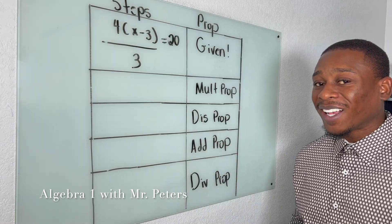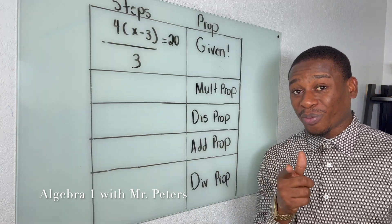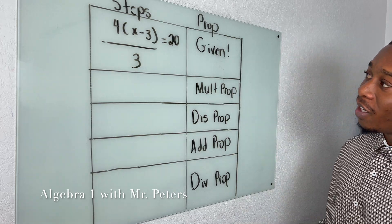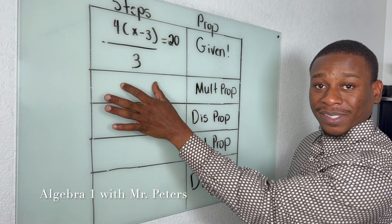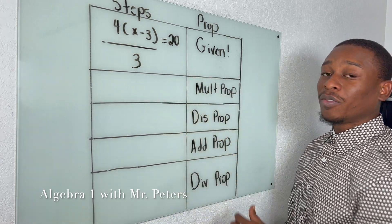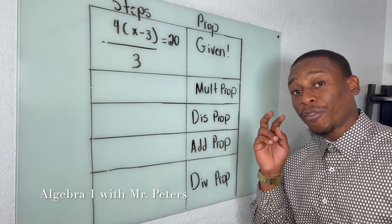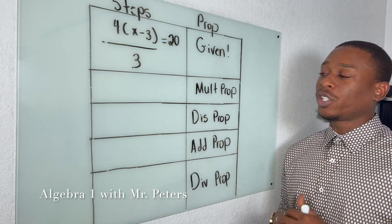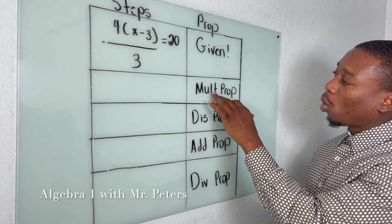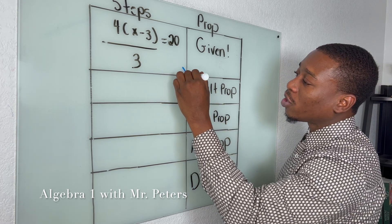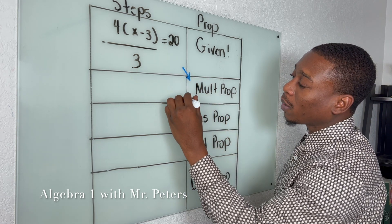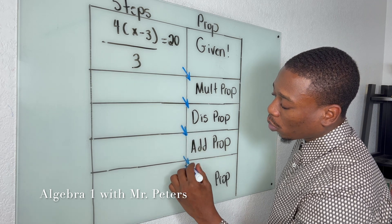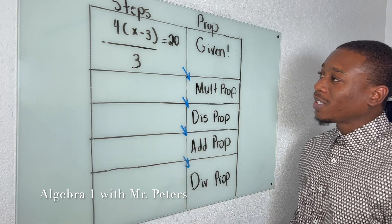In problem number two, they threw a curveball in there. They get us used to the steps and then we give the reasons, and now they flip it around. Just pay attention to what the properties are and know that same format is going to be present.